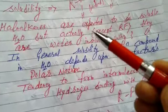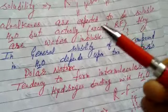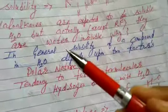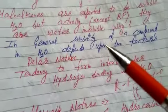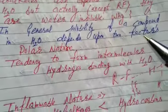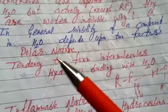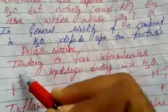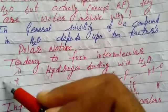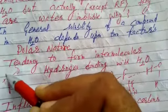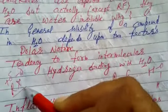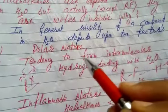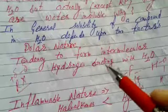They are expected to be soluble, but actually they are insoluble. We will mention, in general, solubility of a compound in water depends upon two factors. Number one, polar nature. Now, RX, X is the electronegative part, partial negative. R is the carbon chain, partial positive. They are polar. And second factor, tendency to form intermolecular hydrogen bonding with water molecule.